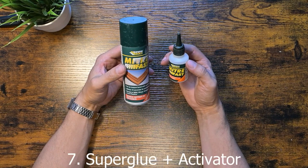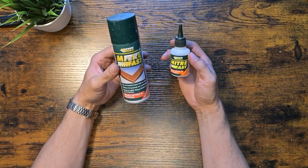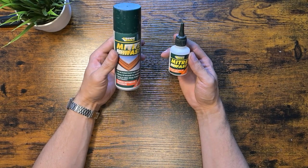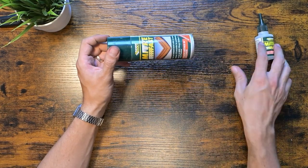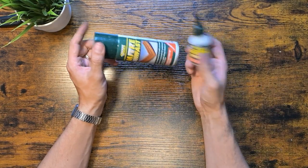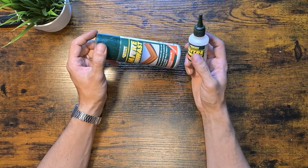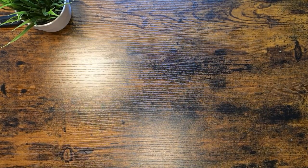Every DIY enthusiast should have superglue on hand, and preferably also some activator. Once you spray some activator on one piece and glue on the other they bond instantaneously. I can't even count the amount of repairs I've done with this.